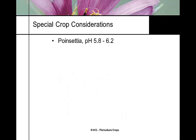Crop-specific pH considerations: poinsettias prefer pH 5.8–6.2. You want low boron levels but need higher molybdenum and zinc. If you have high boron levels in your water, you may need to remove it, as poinsettias are susceptible to boron toxicity. If you've never grown a crop before, shoot for the standards and look at similar plants from similar ecological backgrounds — examine the environment the plant adapted from to find a correlation.